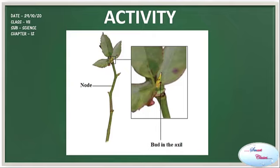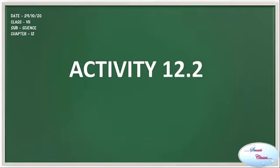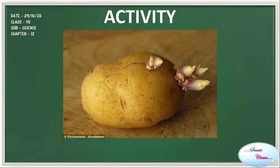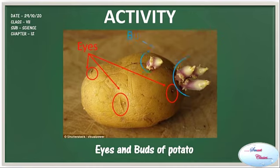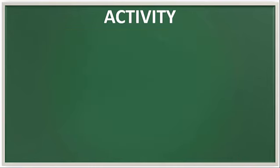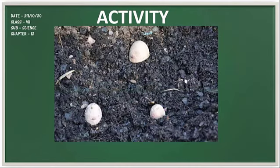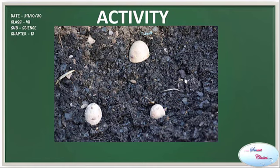Let's discuss another activity, which is Activity 12.2. For this activity, you need a potato. Take a fresh potato and cut it into 3 to 4 pieces, making sure that each piece has an eye. Now dig the soil and place the potato on the ground — make sure the soil is moist. When placing the potatoes, keep in mind that the sprouts are facing the sky, and make sure each potato has decent space for growth. After that, bury the potato and water them regularly to support growth.